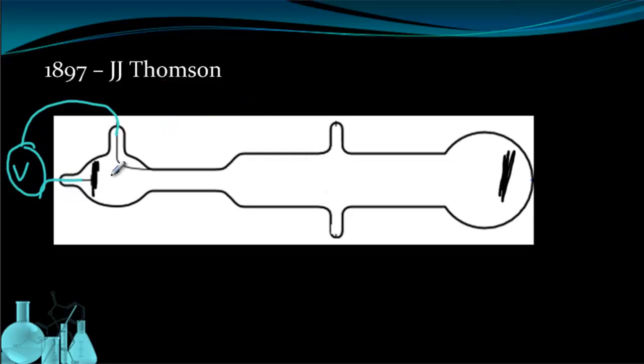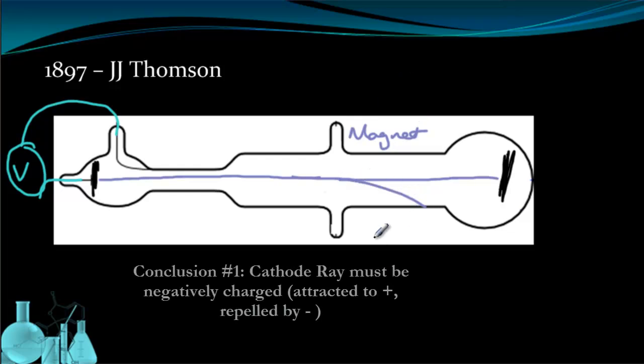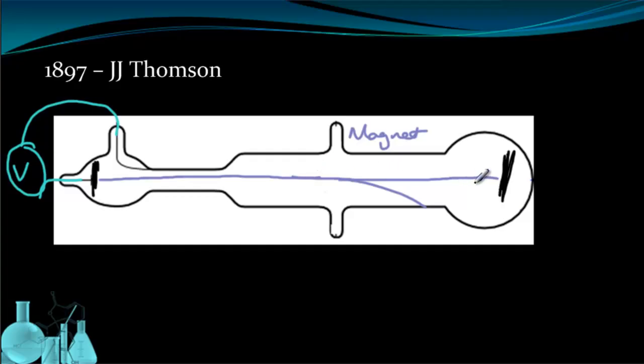When you connect the power source, an electric current generates a cathode ray from one plate to the other. Now this beam could be manipulated by a number of things. If you put a magnet on one end, the beam would bend towards it. If you put the positive end of the magnet there, if you instead put the negative end of the magnet here, you'd see the beam bend away from it. The second thing you can figure out from the Crook's tube is that if it's a complete vacuum in the chamber, this beam can't form. There has to be some gas in there to get this cathode ray to extend across.